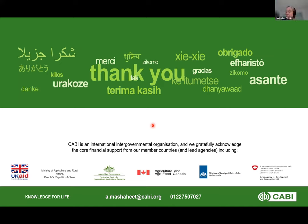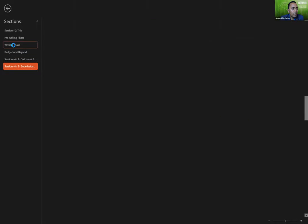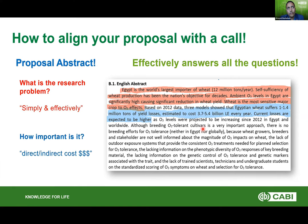Somebody asked to share some sample objectives. Going back to the proposal we were discussing, this grant was proposing to develop ozone-tolerant wheat varieties. To do so, we need to identify the source of tolerance. This forms an objective: identify sources of ozone tolerance in wheat. Each knowledge gap in your background translates directly into a main objective — that's how objectives are structured.